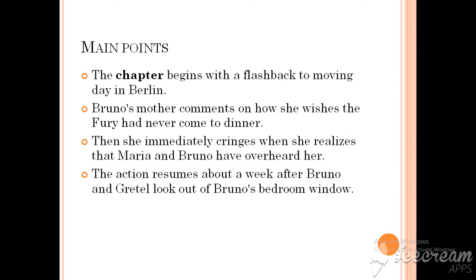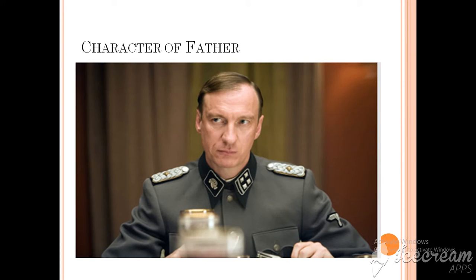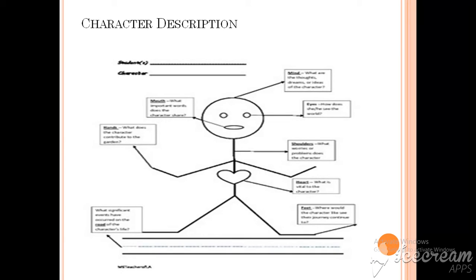Despite these points, when you do the rereading of your chapter, you will be writing your own main points, so that you may complete the upcoming task. The upcoming task is to write the character of Bruno's father. While writing the character, you will follow the same character description format as you did for Gretel and Bruno's character, making this kind of shape along with all the character trait tags.